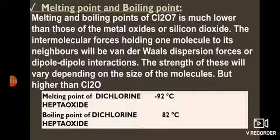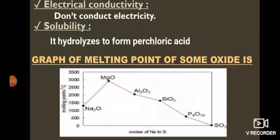Melting and boiling point of dichlorine heptoxide: much lower than metal oxides or silicon dioxide because of weak van der Waals forces or dipole-dipole interactions whose strength depends on molecular size. Melting point: −92°C; boiling point: 82°C — greater than dichlorine oxide due to its larger molecular size. Electrical conductivity: molecules cannot conduct electricity as ions and electrons are required for current. Solubility: when added to water, Cl2O7 undergoes hydrolysis to form perchloric acid.